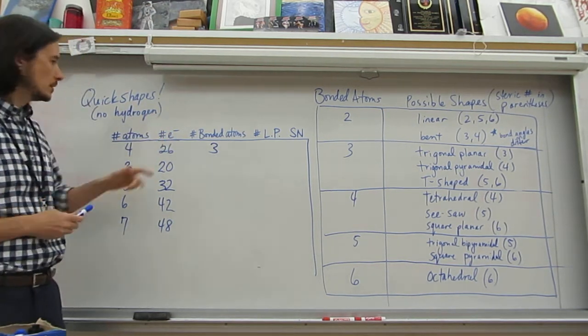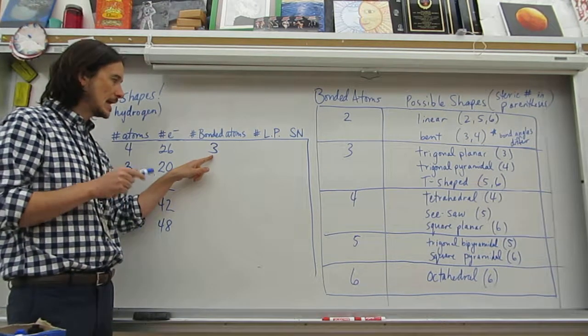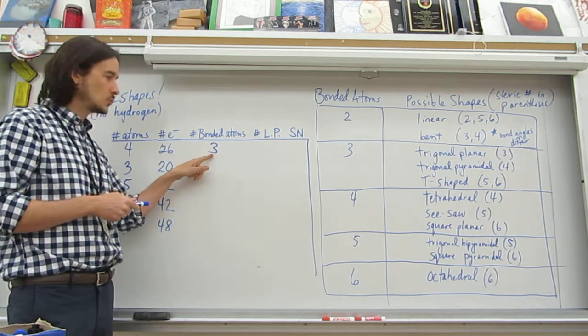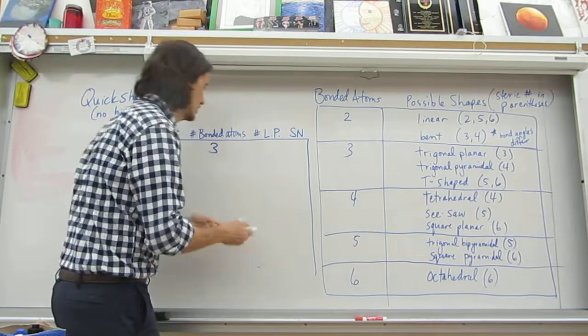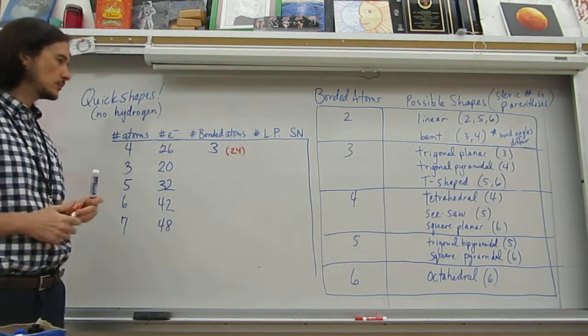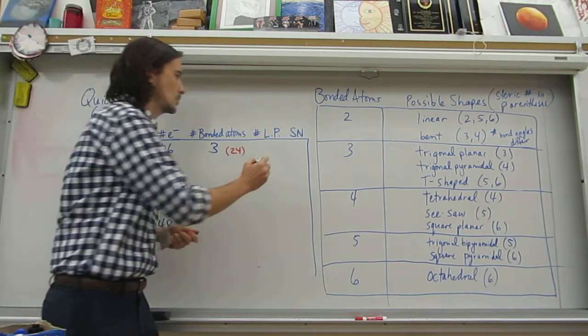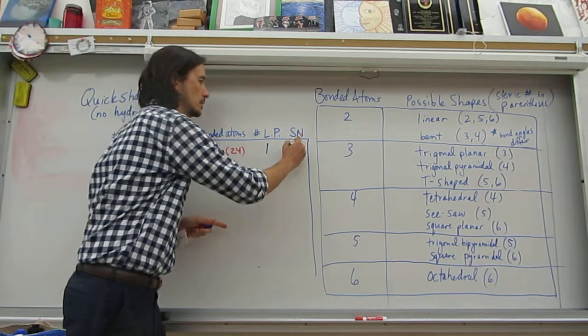So we have three bonded atoms. Three bonded atoms are going to need octets. To have them have an octet, you need 8 electrons each, or 3 times 8. So in parentheses here, I'm just going to write a 24. Okay. That takes care of 24 electrons. That leaves us with 2. So we have one lone pair. So we have a steric number 4.